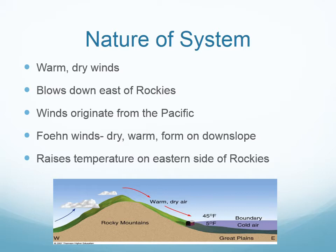The Chinook Winds are known for rapid temperature changes — specifically, the temperature tends to rise. On record, on January 11th, 1983, the temperature in Calgary rose from negative 17 degrees Celsius to 13 degrees Celsius in only four hours.